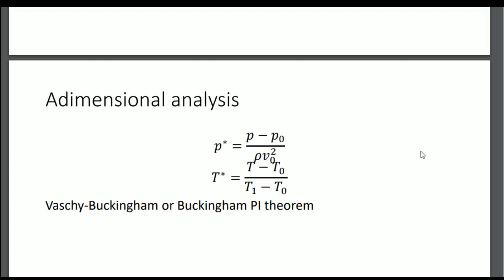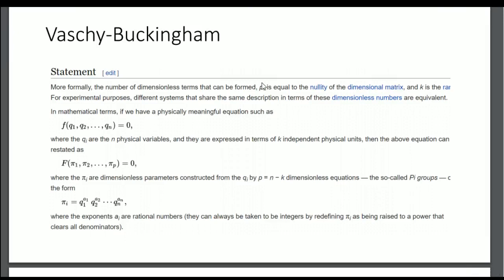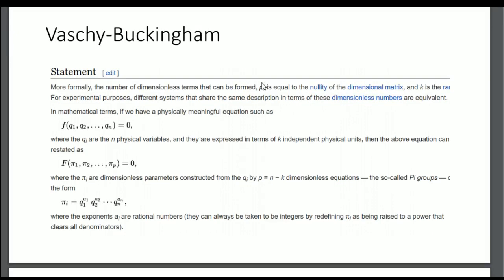We will use the Vaschy-Buckingham theorem — known in English as the Buckingham Pi theorem. It states that you can regroup physically meaningful systems into a dimensionless equation to characterize the flow. Your final operator depends only on powers of these expressions, and dimensional analysis can sometimes reveal the coefficients and answers to many problems.